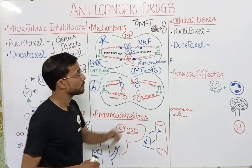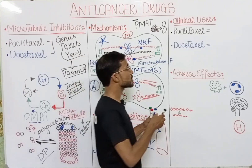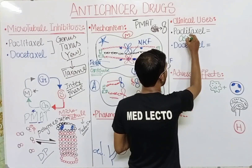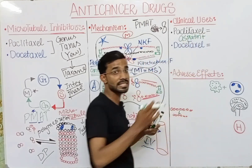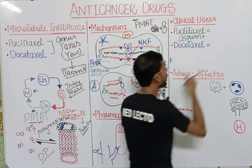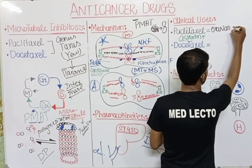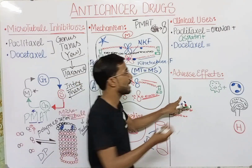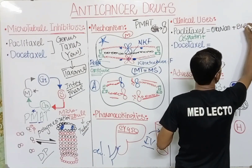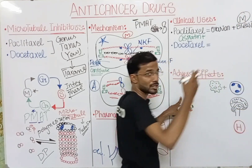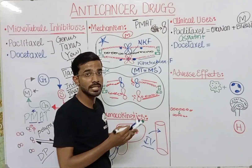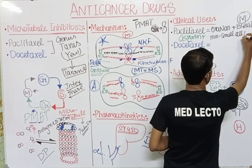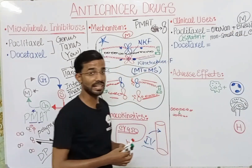For clinical uses of paclitaxel: it is used in combination with cisplatin as combined chemotherapy for ovarian cancer. Paclitaxel can also be given for metastatic breast cancer — cancer that has spread to other parts of the body. It is also used for non-small cell lung cancer.